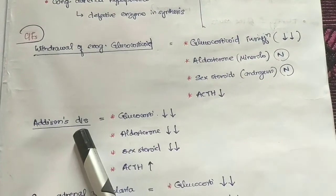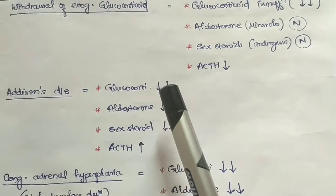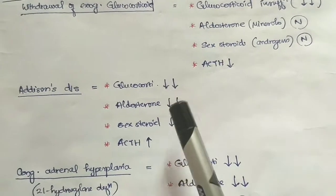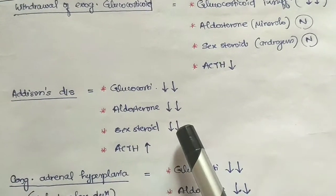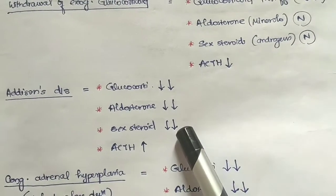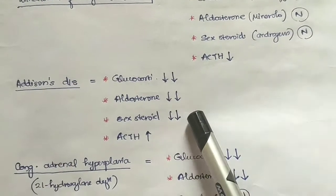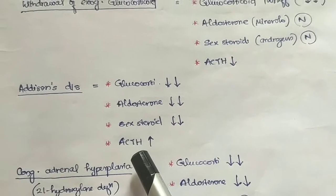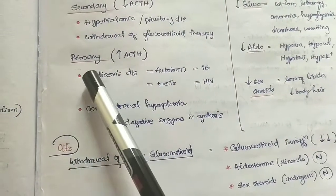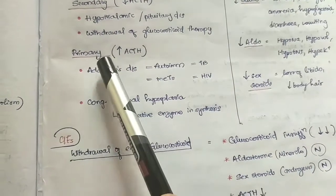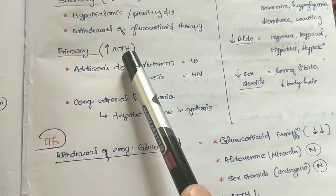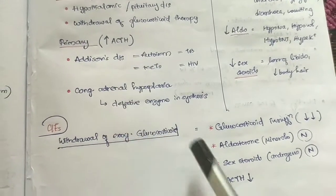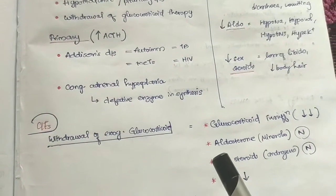In Addison's disease, aldosterone is reduced and sex steroids are also reduced. But the ACTH levels are high because the body tries to compensate by increasing ACTH production.